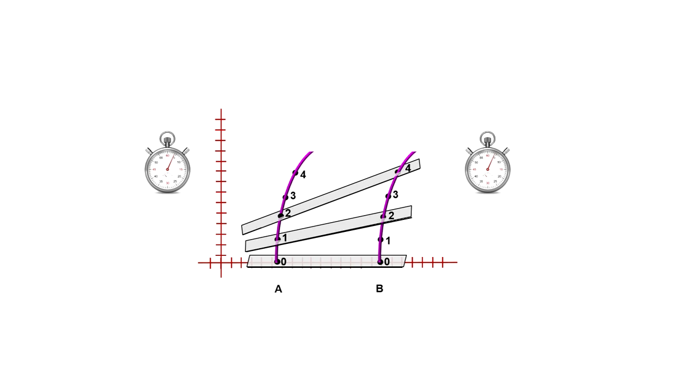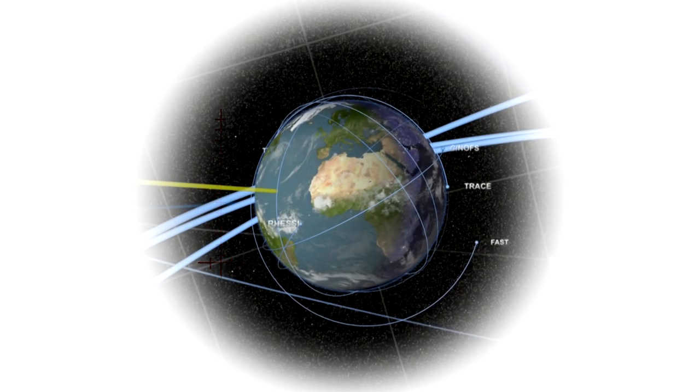The equivalence principle tells us the same thing will happen near a massive body. Gravity slows down time. Newton's gravitation has no such implication.